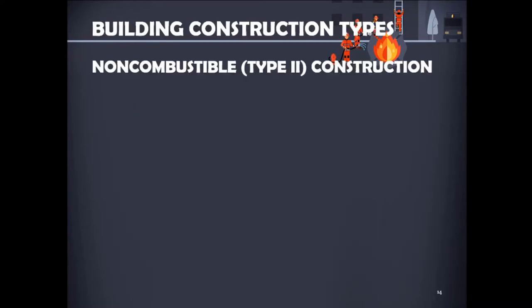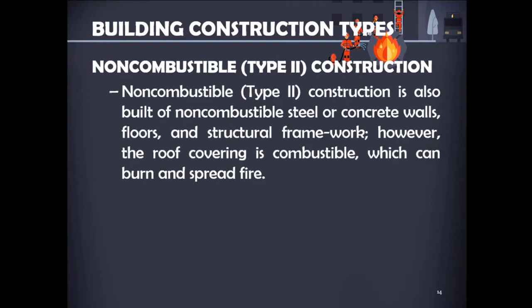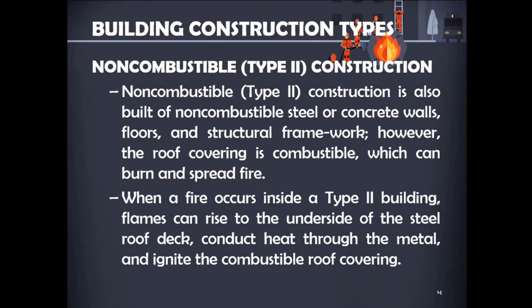Second is non-combustible Type 2 construction, also built of non-combustible steel or concrete walls, floors, and structural framework. However, the roof covering is combustible and can burn and spread fire. The roof covering of a Type 2 building can be constructed of a combustible built-up roof covering, a layered asphalt and felt paper covering, or an ethylene-propylene-diene monomer (EPDM) or polyvinyl chloride (PVC) thermoplastic membrane. When a fire occurs inside a Type 2 building, flames can rise to the underside of the steel roof deck, conduct heat through metal, and ignite the combustible roof covering. The asphalt, felt paper, and foam insulation may burn and spread fire along the roof covering.